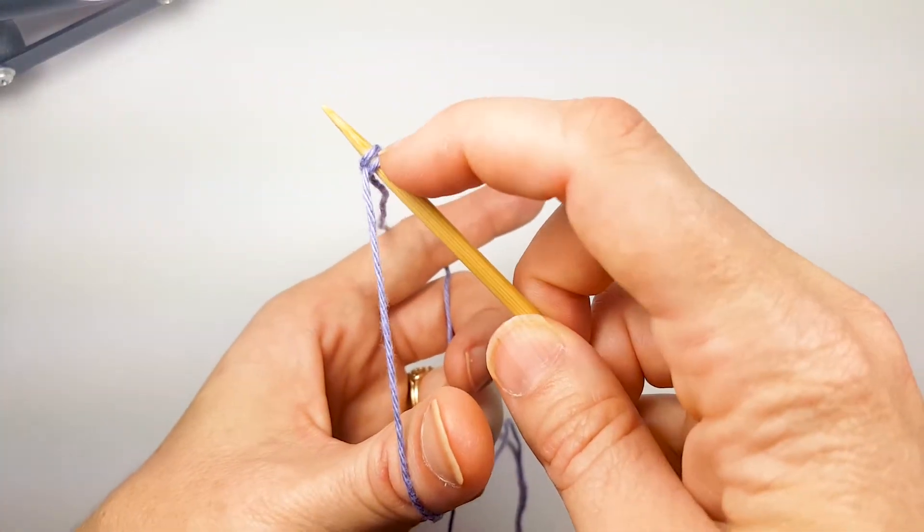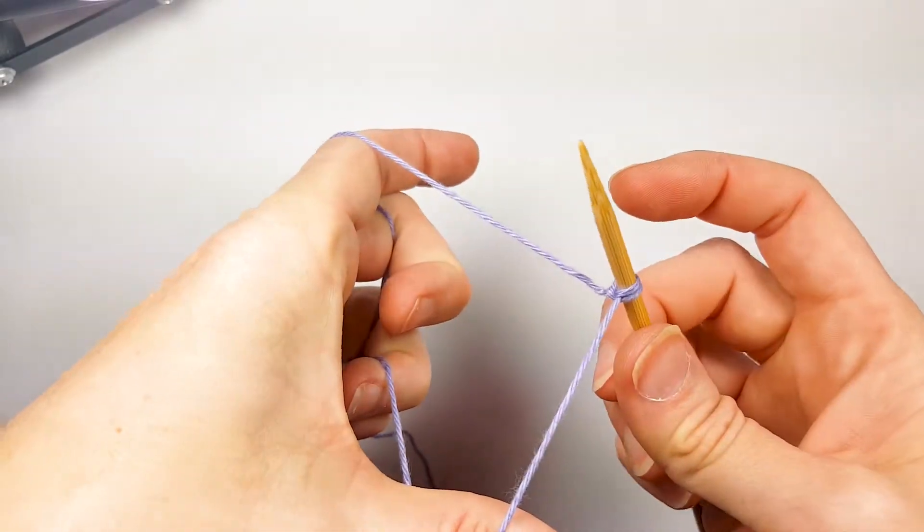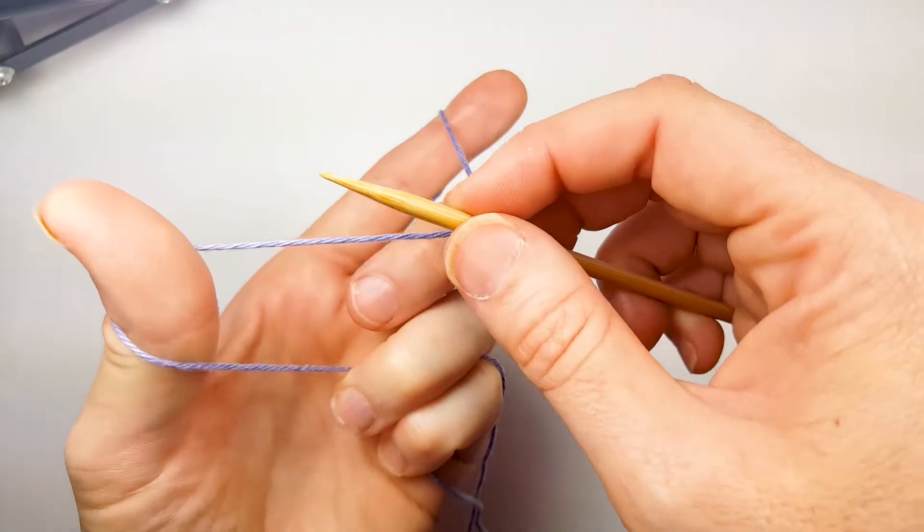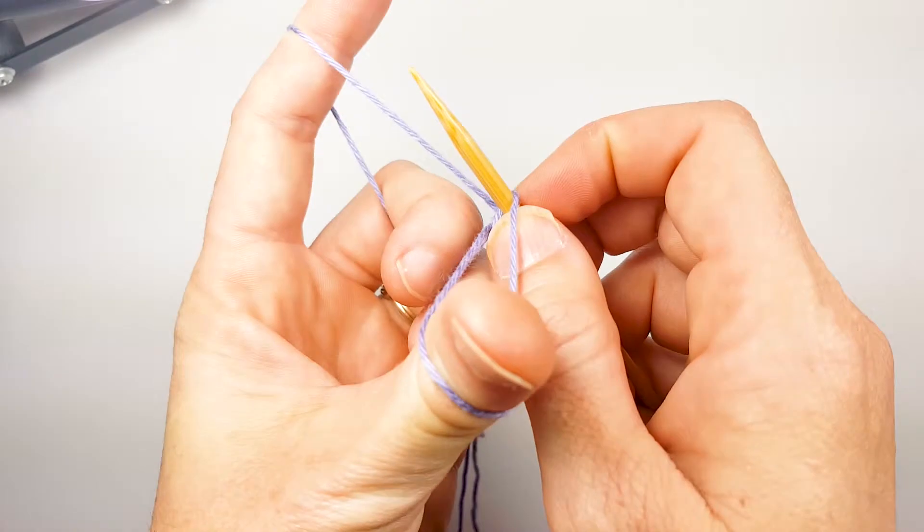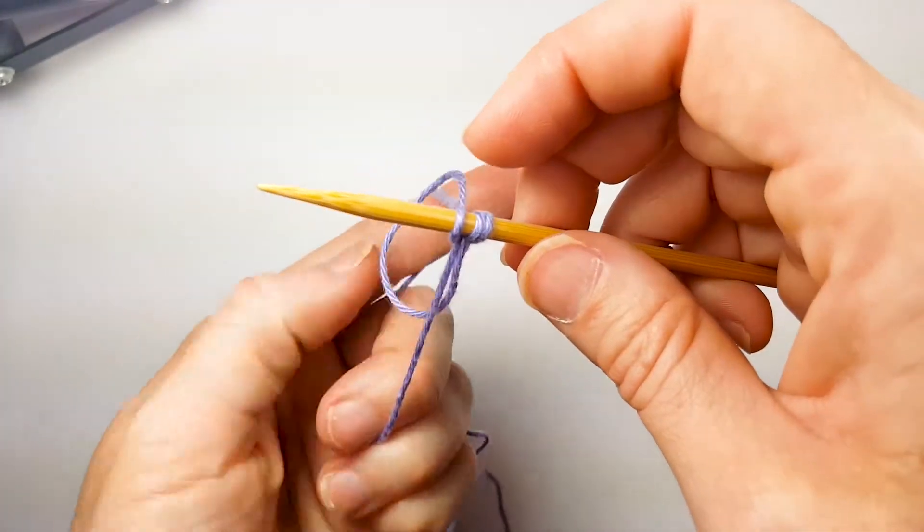So all subsequent stitches, our needle is on the top of that upright now. We're going to go around the outside, up through the loop, catch our yarn, and pull it back through.